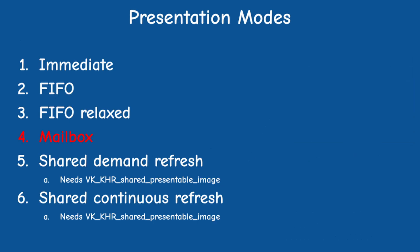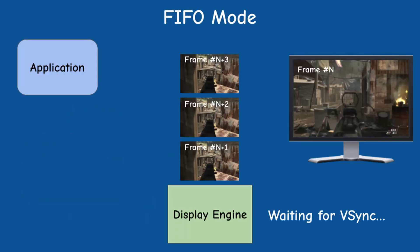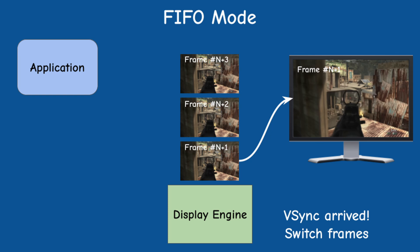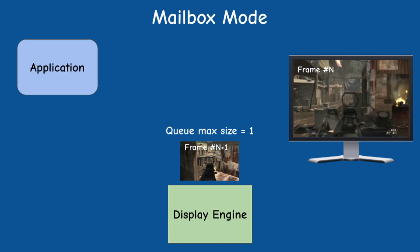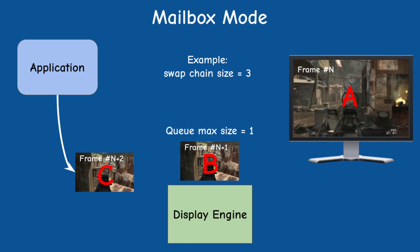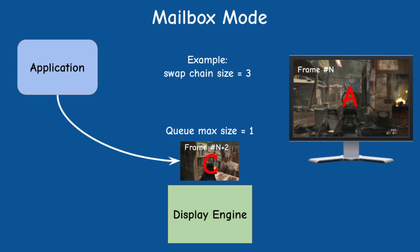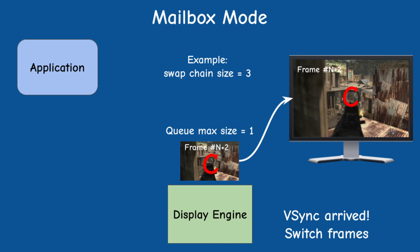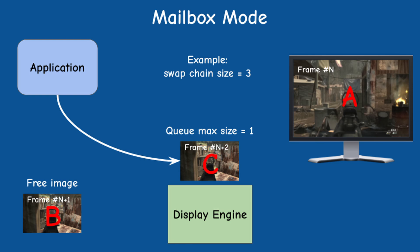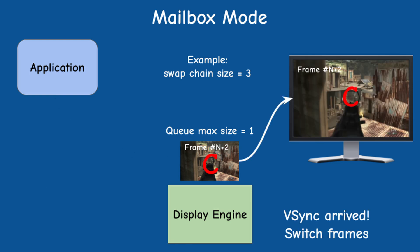The last mode I want to discuss today is the mailbox mode. It is similar to FIFO in the sense that images go into a queue on their way to the display and frame swapping happens only during vsync. The difference is that the queue can contain no more than one image, regardless of the number of images in the swap chain. For example, if the swap chain contains three images and we have image A on the display, image B in the queue waiting for the next vsync, and the application has just finished rendering image C, then image C will replace B in the queue, so on the next vsync we will pick up image C. After this queue replacement takes place, image B is available for rendering in the application.